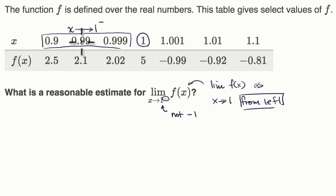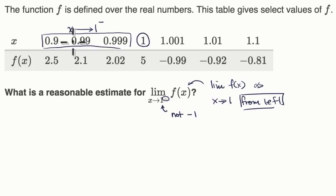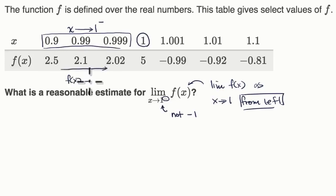When we get even closer to one from the left, we go to 2.1. When we get even closer to one from the left, we're getting even closer to two. So a reasonable estimate for the limit as x approaches one from the left of f of x is that f of x is approaching two.